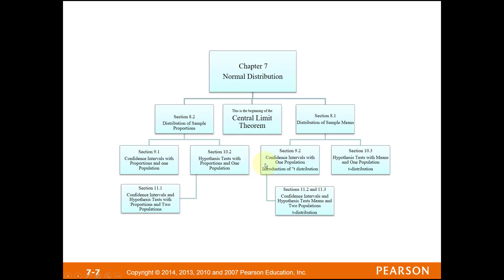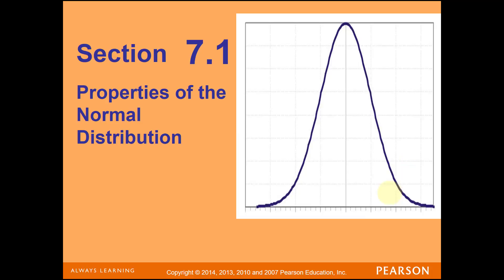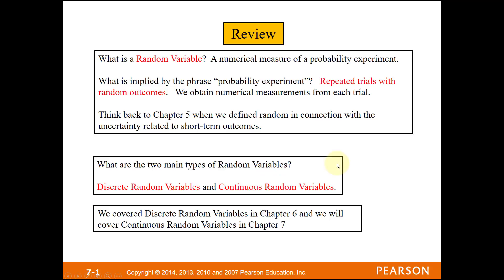We're still talking about random variables. A random variable is a numerical measure of a probability experiment — we repeat something over and over again and the outcomes are quantitative and numerical. They're also random, meaning we have short-term uncertainty, but in statistics we're looking for long-term patterns in order to make predictions.